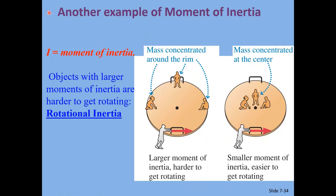Another illustration: kids on a playground merry-go-round. When the kids are distributed far from the center pivot, it's much harder to push and get it rotating. When the kids move toward the center, the ride is much easier to push and can spin much faster. The difference is purely the distribution of mass — mass farther from the pivot gives a larger moment of inertia than mass near the pivot.